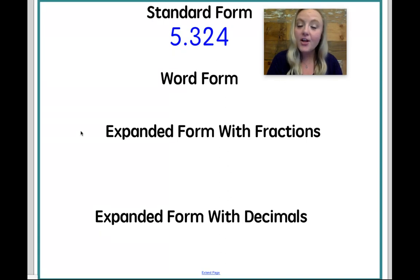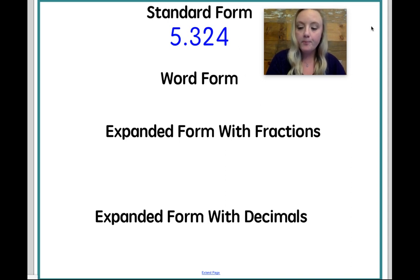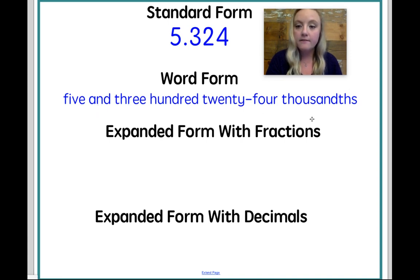Let's take a look at another example. Here we have five and three hundred twenty-four thousandths. That's my whole number, a decimal point, my tenths, hundredths, thousandths. That's how I know to read that as five and three hundred twenty-four thousandths. Let's take a look at that in word form. In word form, wherever your decimal point occurs, you're going to put the word 'and.' So that's five and three hundred twenty-four thousandths.